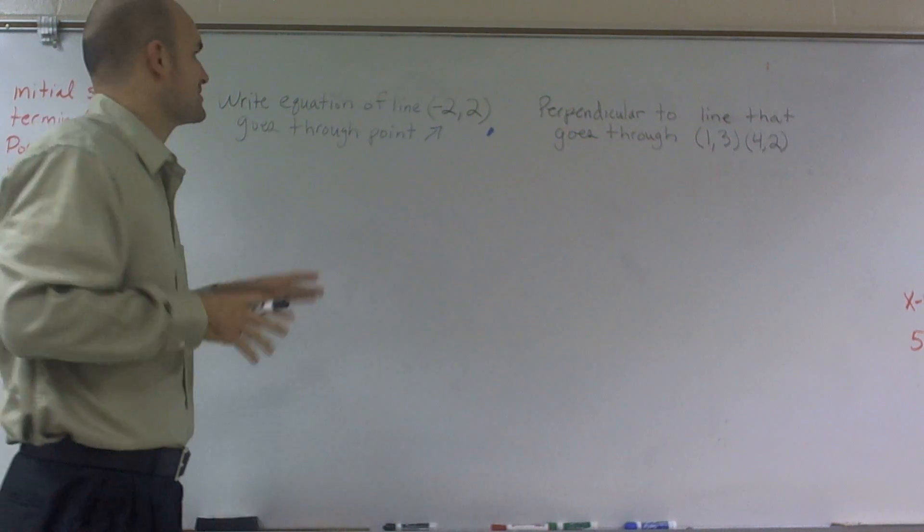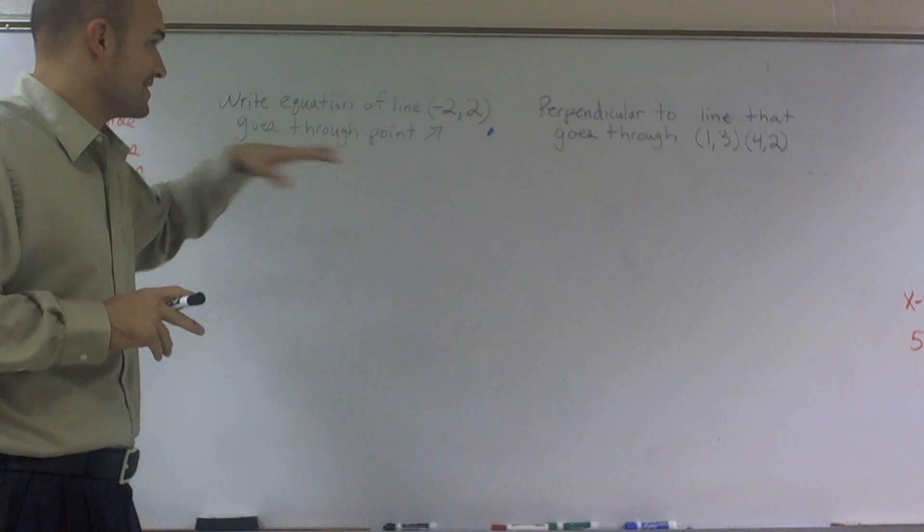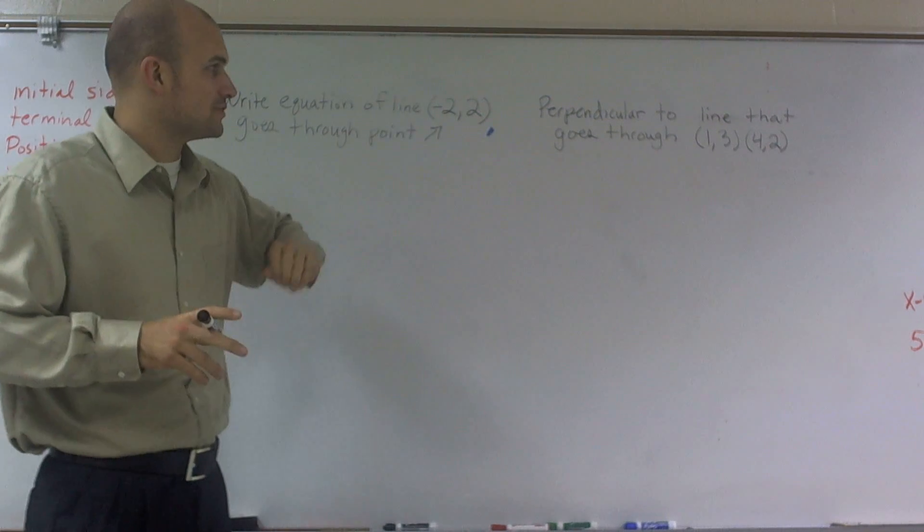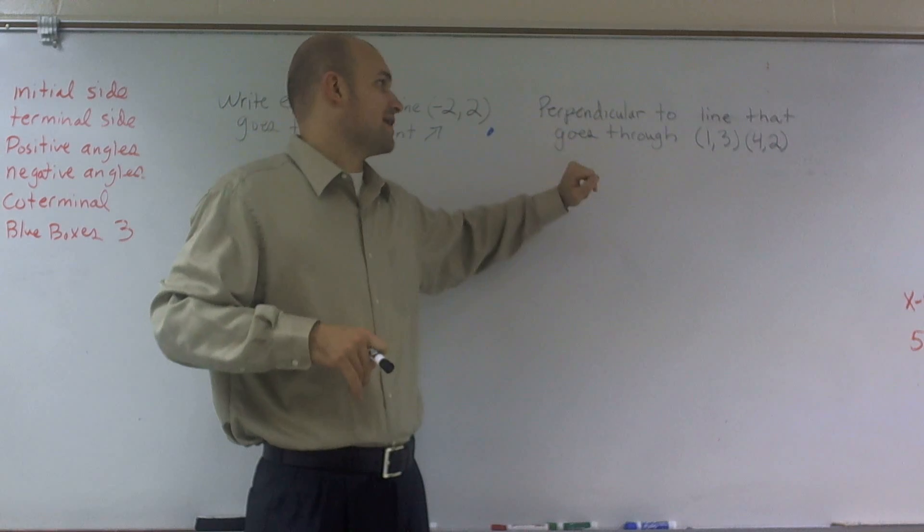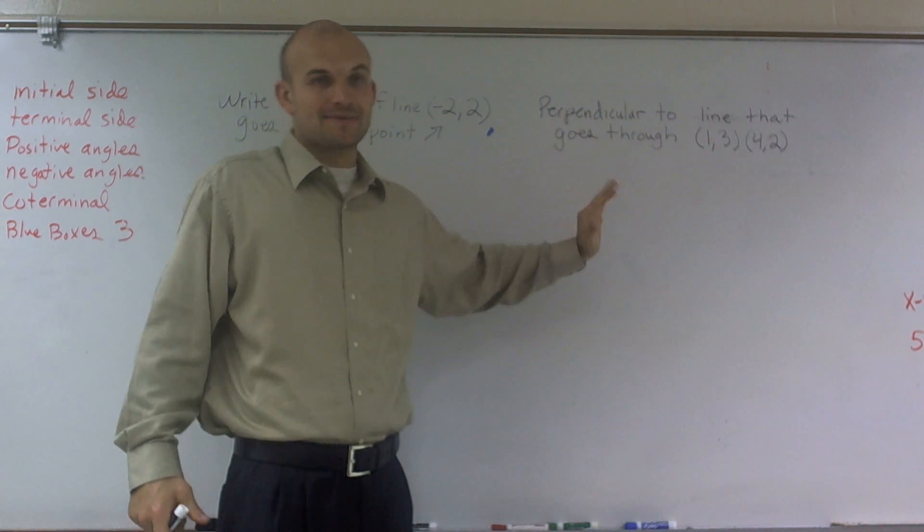All right. What I want to do is show you how to write an equation of a line that goes through a point negative 2, 2, but is perpendicular to a line that goes through the points 1, 3 and 4, 2.